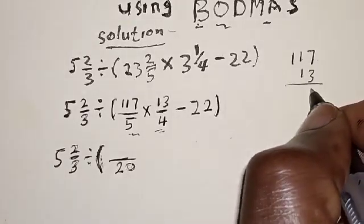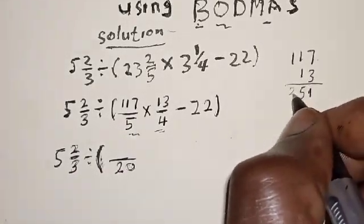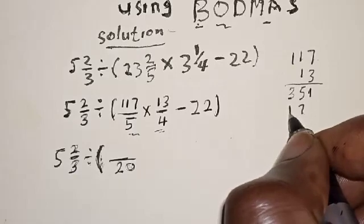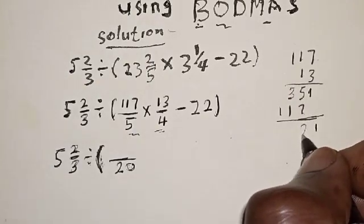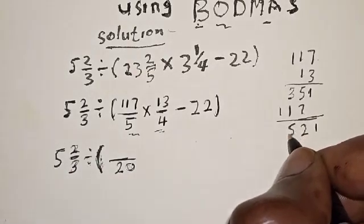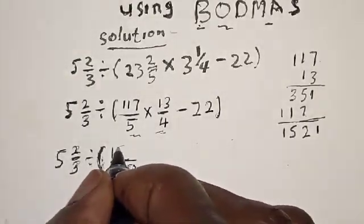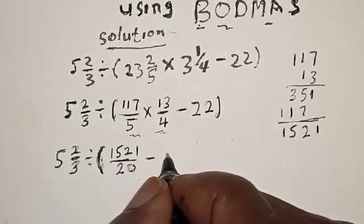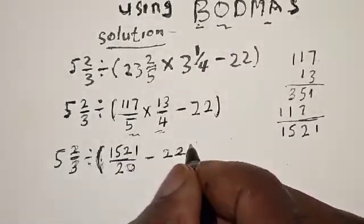Let's compute 117 times 13: 3 times 7 = 21, write 1 carry 2; 3 times 1 = 3 plus 2 = 5; 3 times 1 = 3; then 1 times 7 = 7; 1 times 1 = 1; 1 times 1 = 1. Adding everything: 5 plus 7 = 12, write 2 carry 1; 3 plus 1 plus 1 = 5; and 1. So 117 times 13 = 1521, then minus 22.